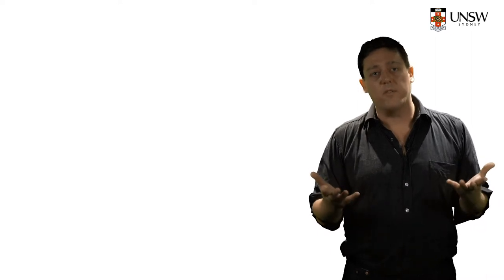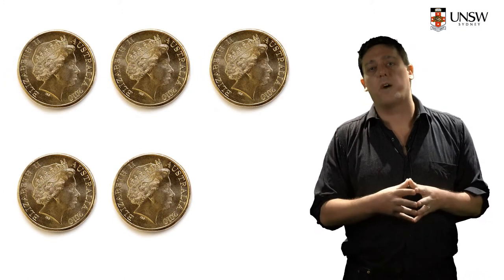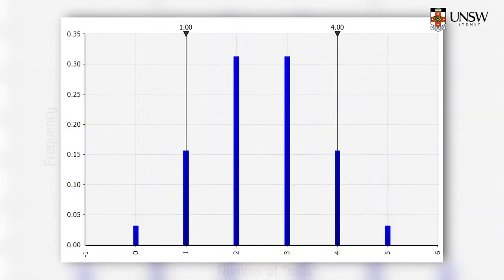I could flip a coin five times and it may well land on tails every single time, or I might get three tails or zero tails out of five coin flips. If a coin is flipped five times there are six possible outcomes ranging from zero tails to five tails, but the likelihood of each outcome is different.